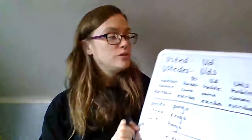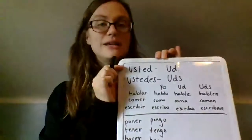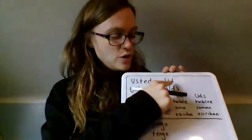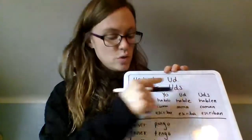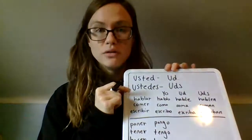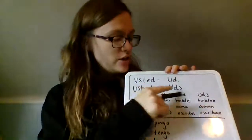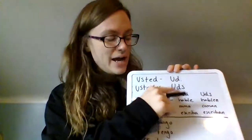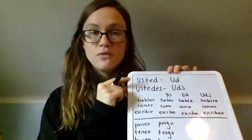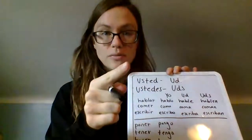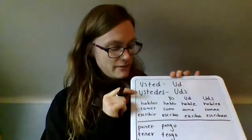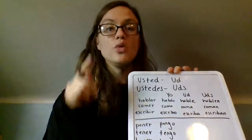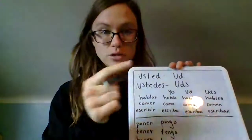We've been learning command forms for usted and ustedes. Who are these people? Usted is you formal, and it's abbreviated UD. Ustedes is you plural, abbreviated UDS. When I have a command in the usted form, I'm commanding you to do something. When I have a command in the ustedes form, I'm commanding you all to do something.